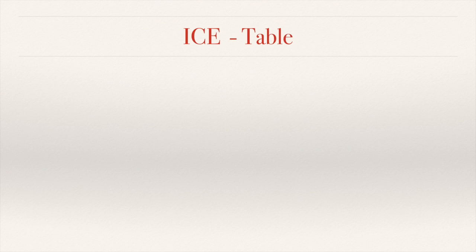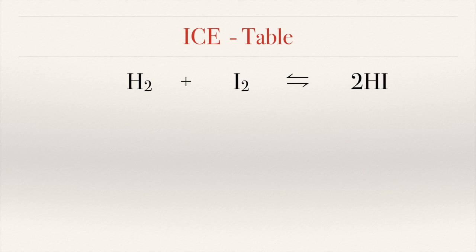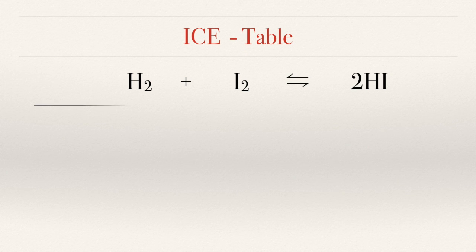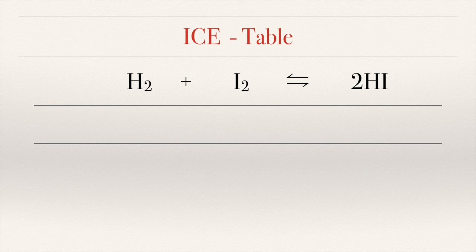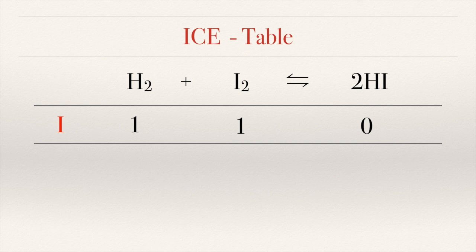Let's look at a sample ICE table for a reaction between hydrogen and iodine forming hydrogen iodide. To determine the equilibrium constant for this reaction, you can generate an ICE table provided you have the initial concentrations and change in concentrations. We assume we start with one mole of hydrogen and one mole of iodine. Since the reaction is just starting, we have zero moles of hydrogen iodide.